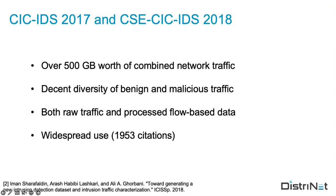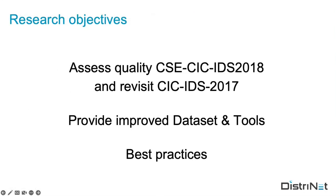One thing we noticed was that there were not a lot of papers that assessed the quality of these datasets, so that's where we came in. We set out to assess the quality of these two datasets. For any issues we found, we would provide an improved dataset to the research community, as well as any fixed tools we developed in the process, and also provide some best practices to the community — like, if you're doing new dataset generation in the future, what kinds of things should you look out for?